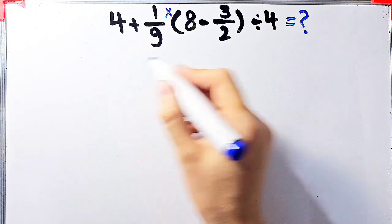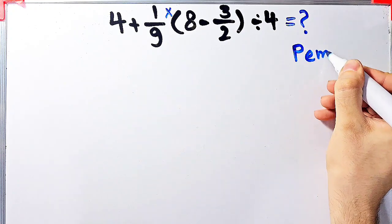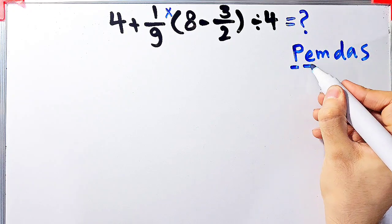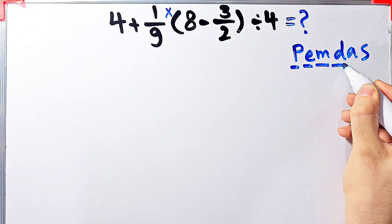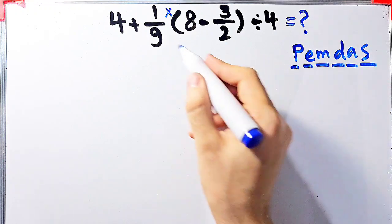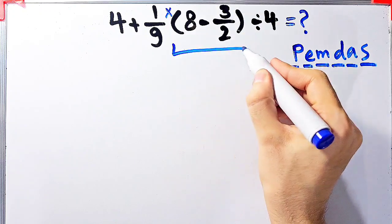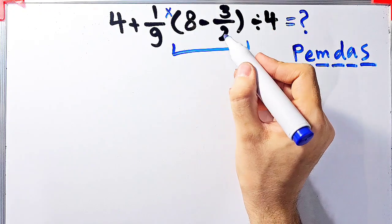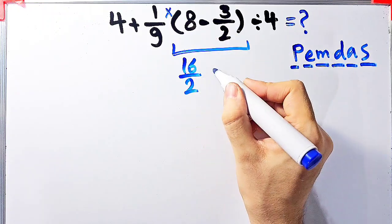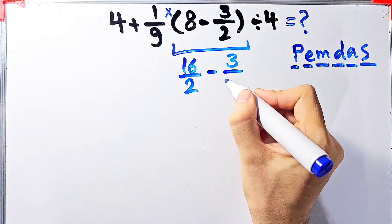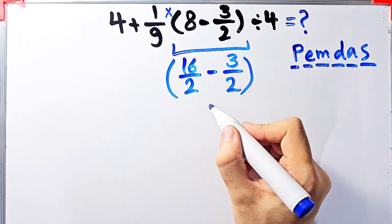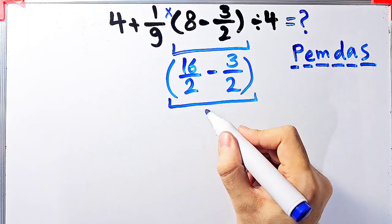To solve this question, we need to follow the order of operations, which is PEMDAS. P stands for parentheses, E stands for exponent, M stands for multiplication, D stands for division, A stands for addition, and S stands for subtraction. According to the PEMDAS rule, first we simplify the parentheses: 8 minus 3 over 2. Since the denominator of this fraction is 2, we can write 8 as 16 over 2. Now we have 16 over 2 minus 3 over 2, which equals 13 over 2. The answer inside the parentheses equals 13 over 2.